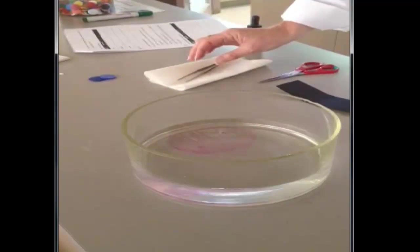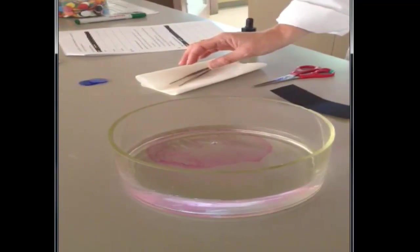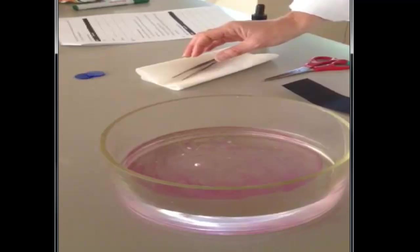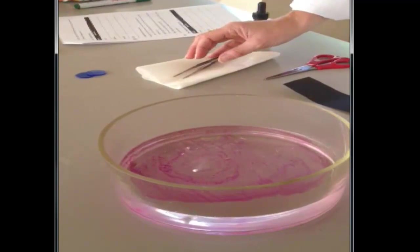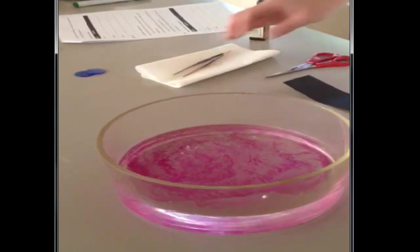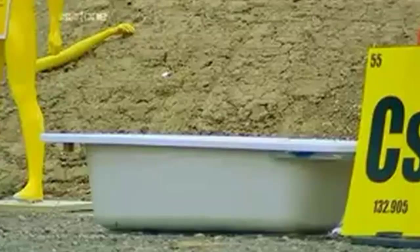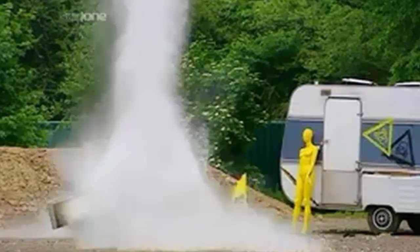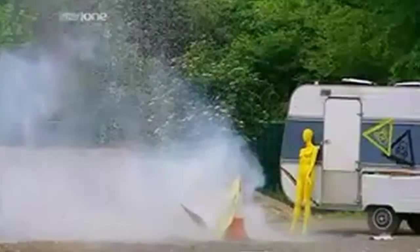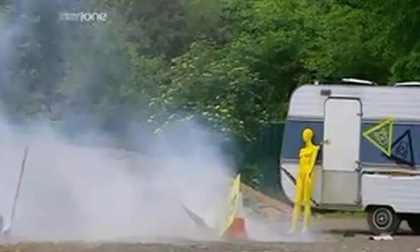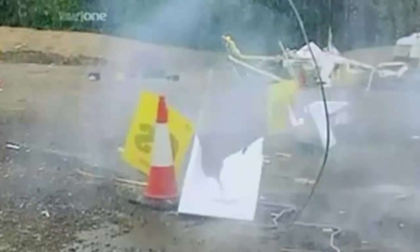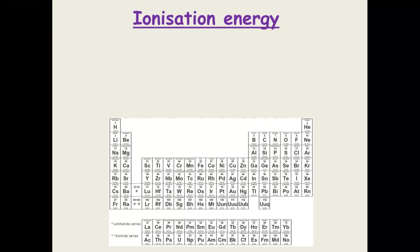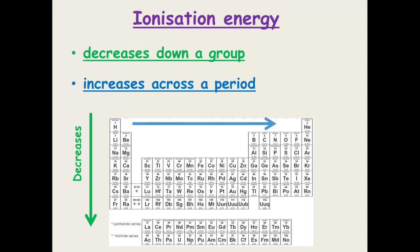In summary, ionization energy decreases down a group and increases across a period.